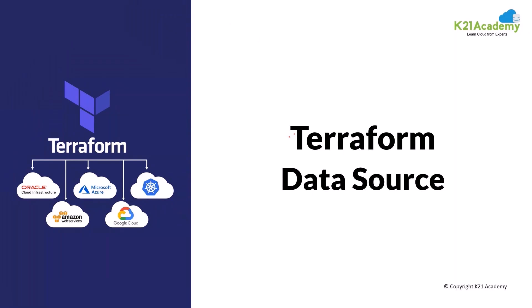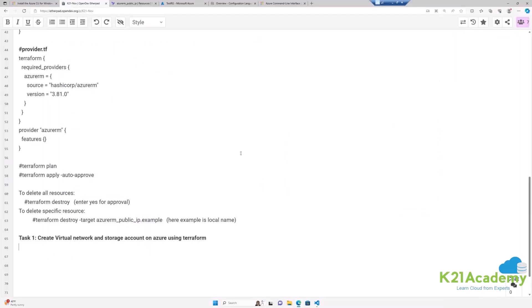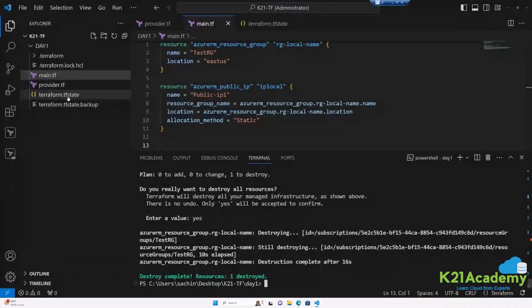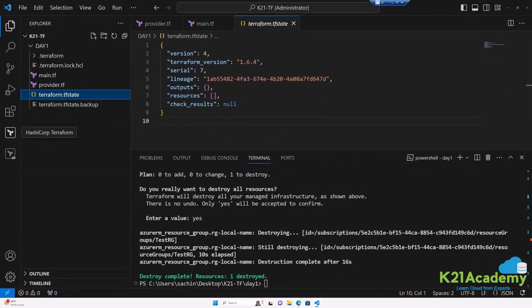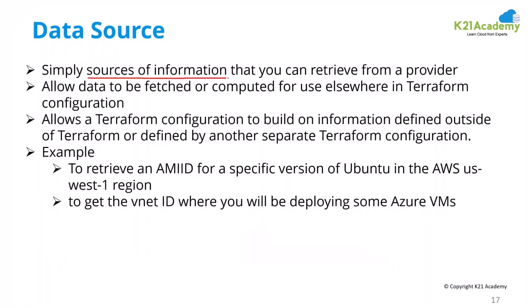What are data sources? Data sources allow you to retrieve information about an existing resource. All the information of your infrastructure is stored in the .tfstate file — the Terraform state file. What data sources can do is source information from your provider. You can fetch the information of a resource and then use it anywhere in your Terraform configuration.